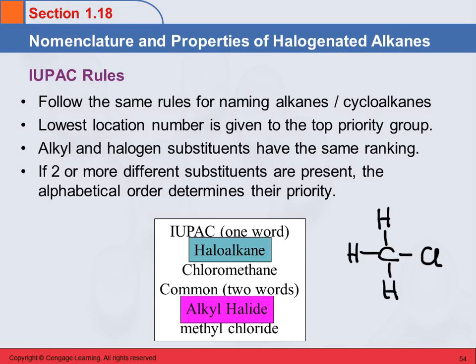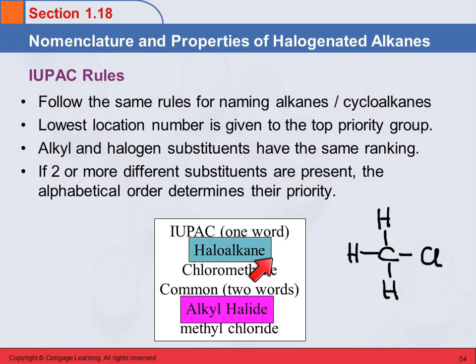Chlorine, we say chloro; bromine would be bromo; and iodine would be iodo. Just like we took methane and said that was methyl as a substituent, chlorine becomes chloro. So we name this as an alkane that's substituted. This has chlorine on it, so we're going to name that as a substituent: chloromethane. There's no need for a number because there's only one carbon — there's only one place it can be. So the IUPAC name for this is Chloromethane.